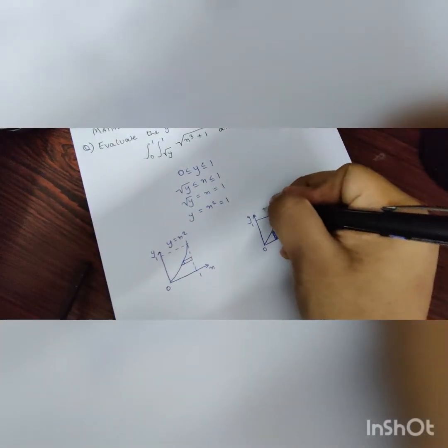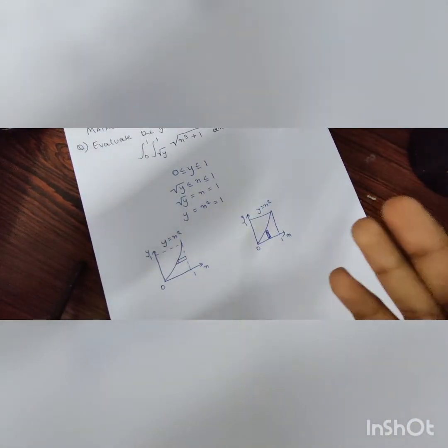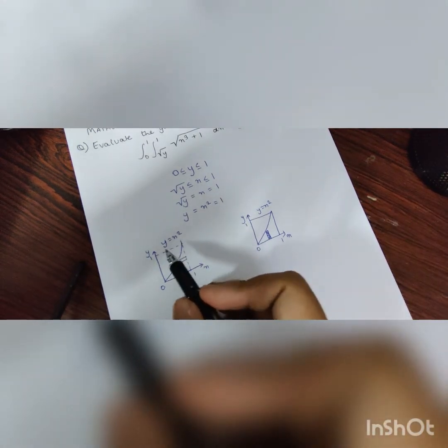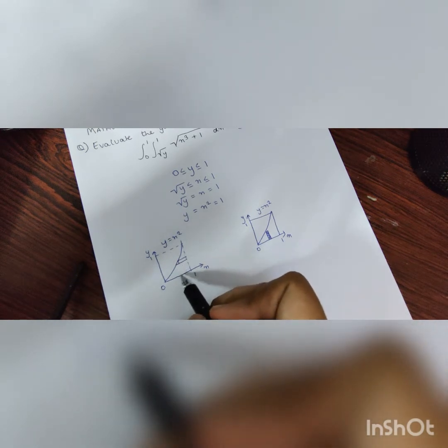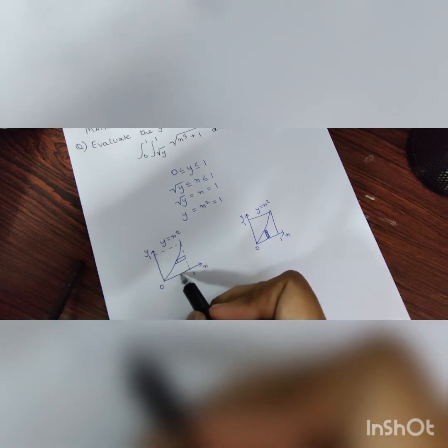Sorry for the weird cut. However, I want to explain one more thing. As we are changing the variable, over here we can see that as there was a restriction, so over here when we were integrating along the x-axis, it was a value of x to 1.